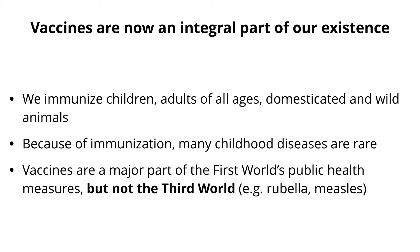There's a rubella vaccine. Rubella is associated with birth defects, much like Zika virus. You can prevent them all, but there are still 15,000 to 20,000 cases of children born every year with congenital rubella syndrome because they don't get the vaccine. This is an issue of cost and distribution.